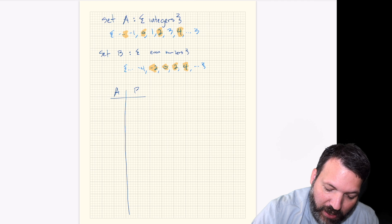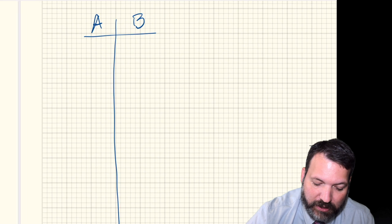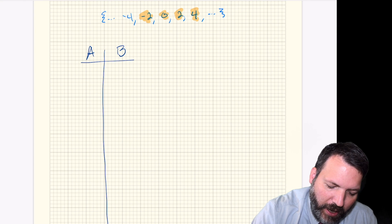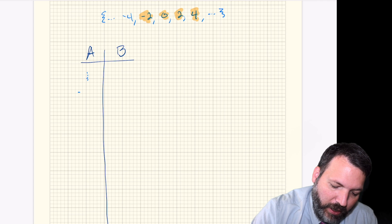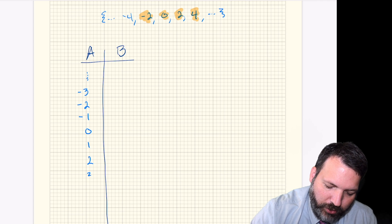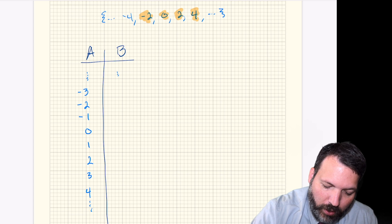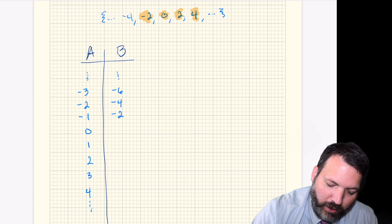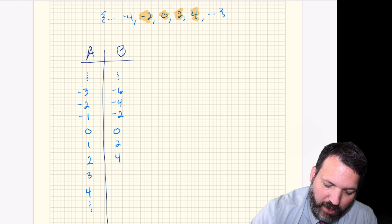So imagine we've got set A here on the left and set B on the right. Set A, again, the integers are going to be things like negative three, negative two, negative one, zero, one, two, three, four, and so on. Whereas set B, I'm going to go with negative six, negative four, negative two, zero. Remember, these are the even integers, two, four, six, eight, and so on.